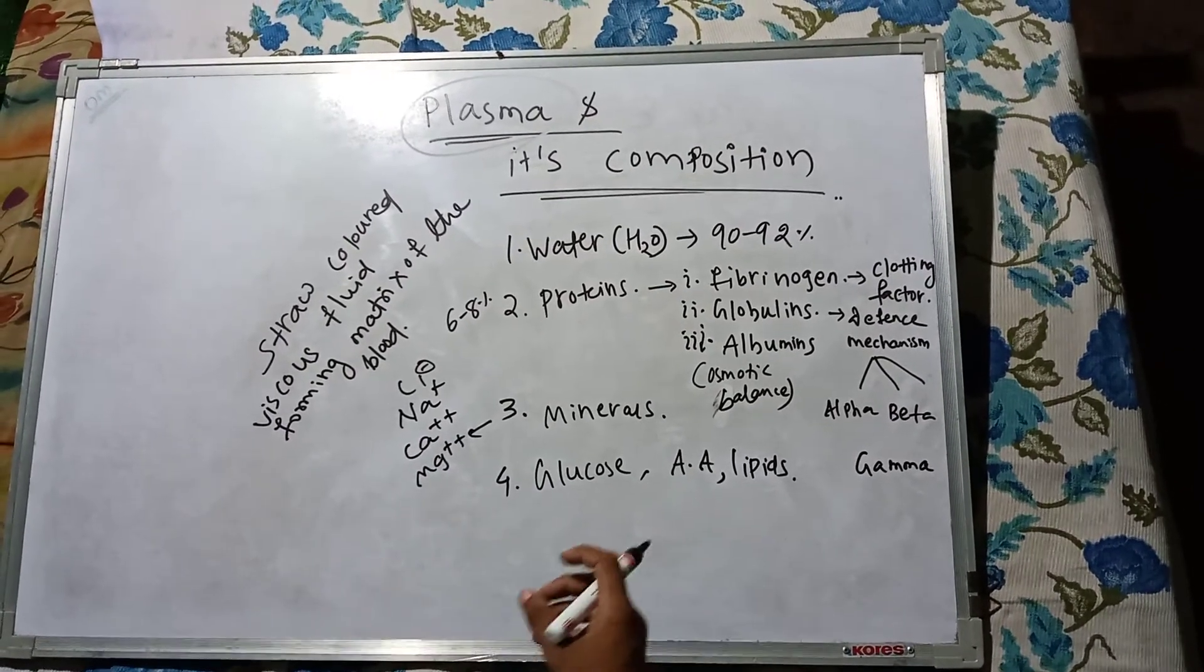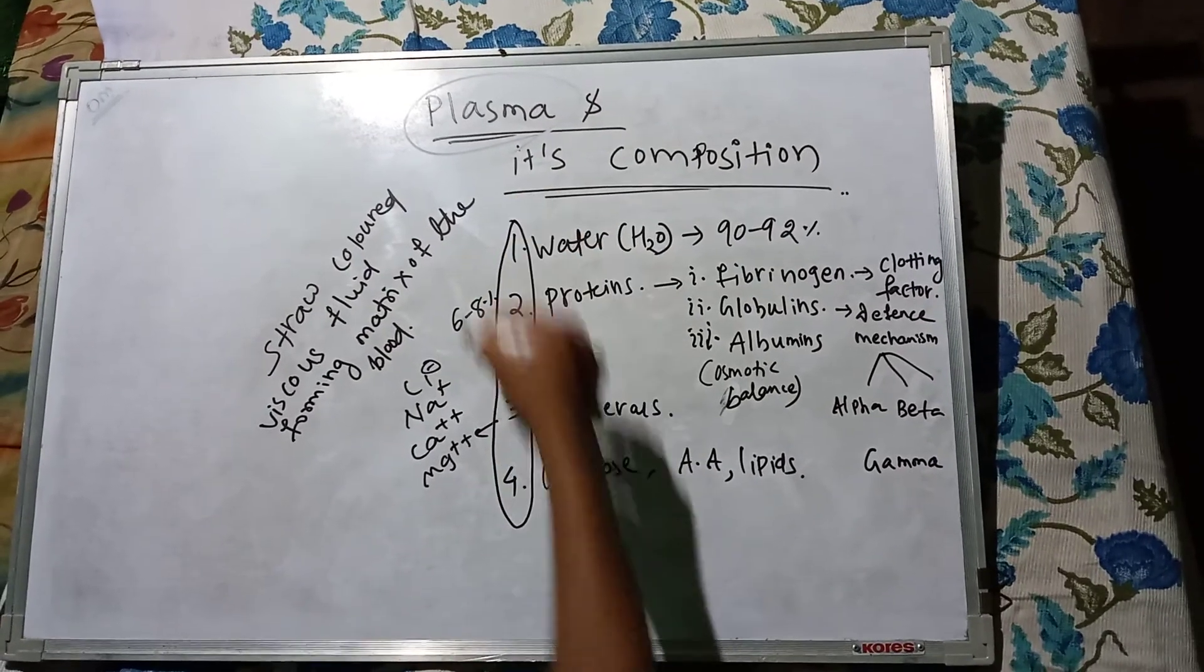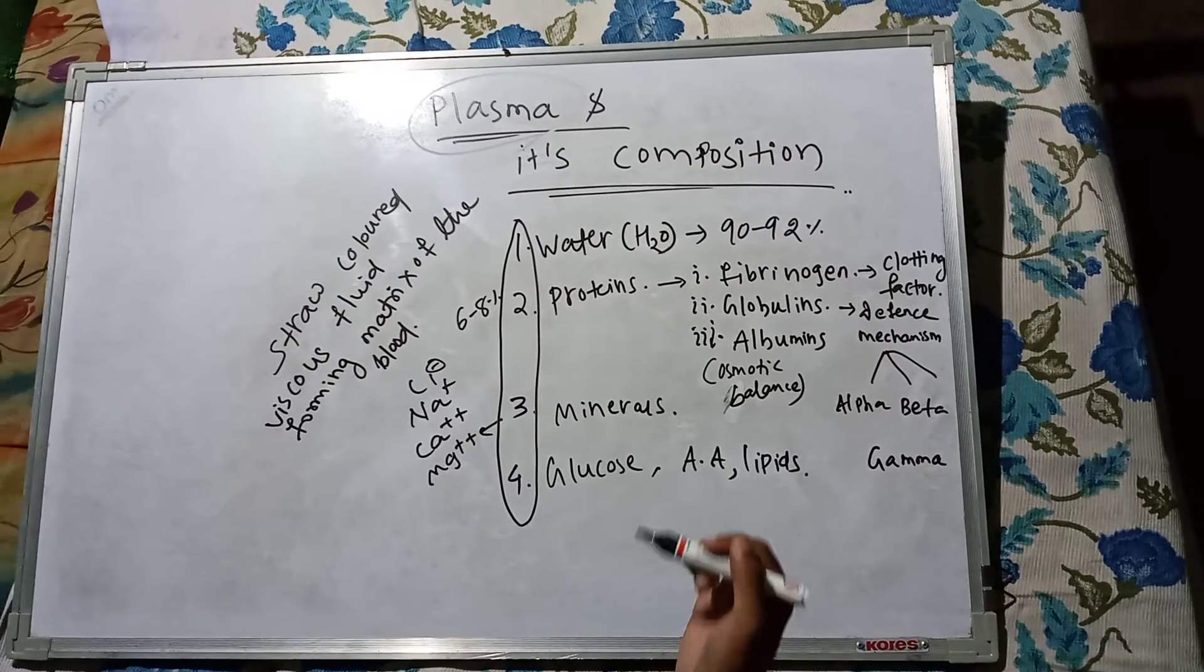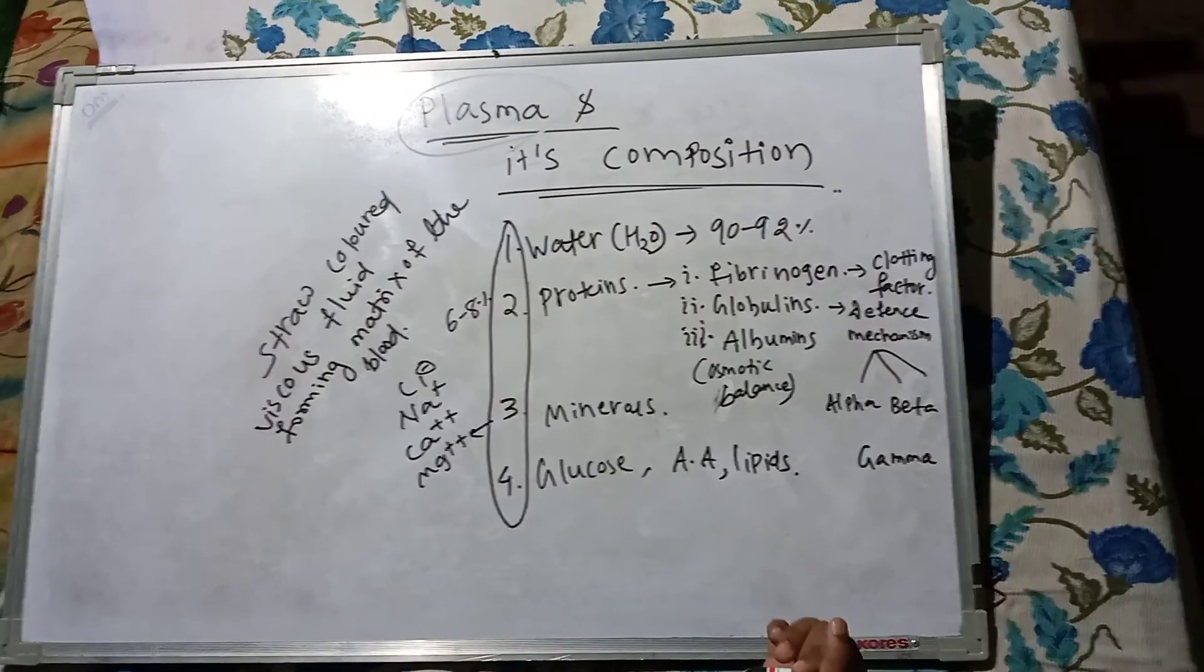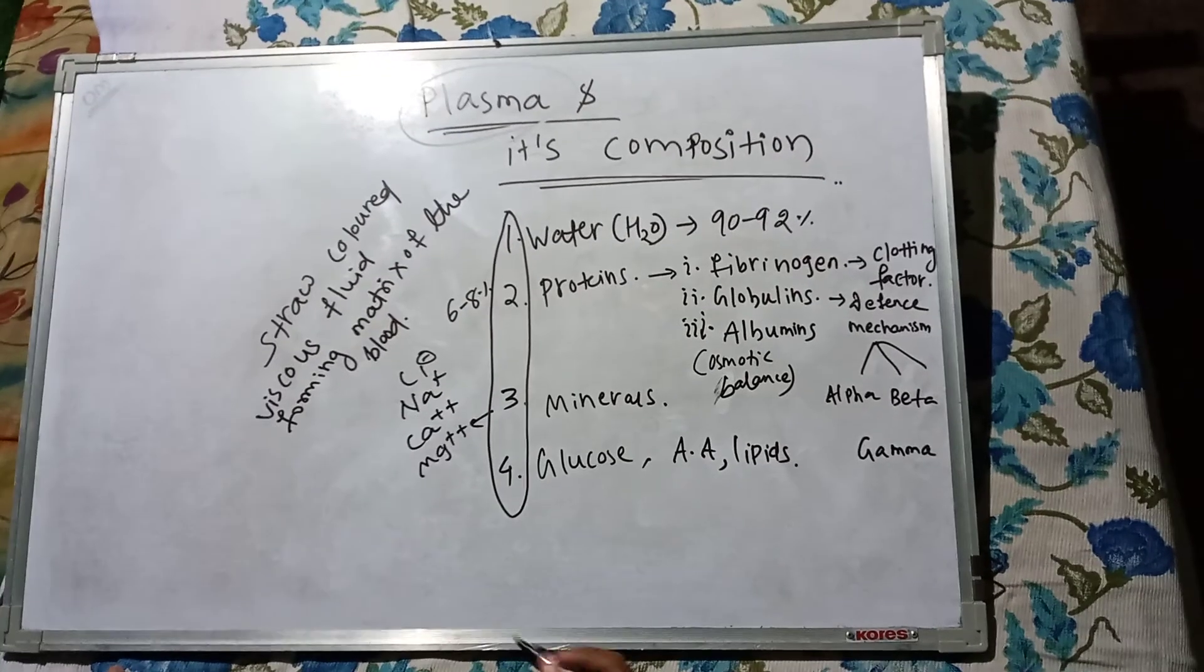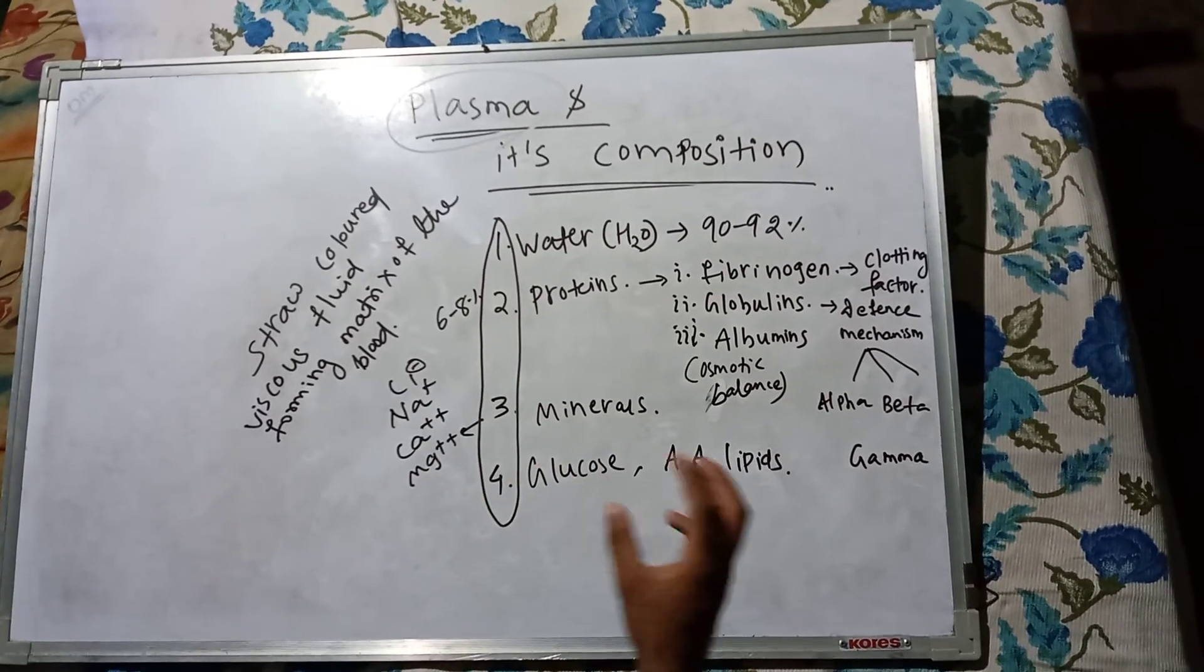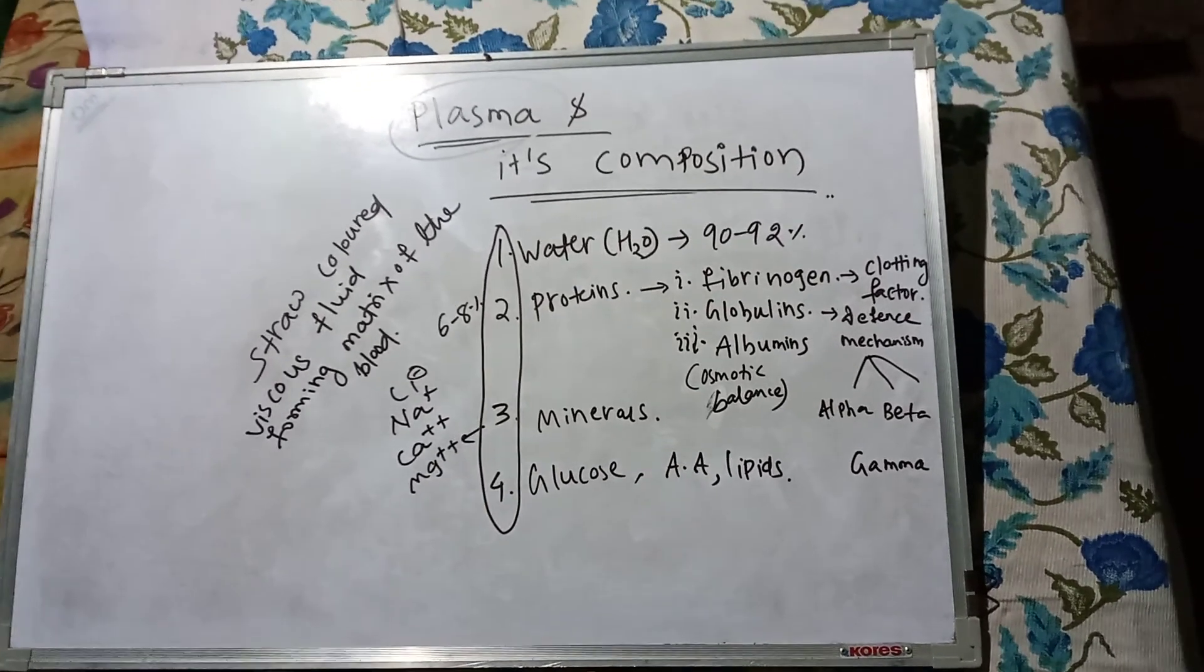So basically, these are the four compositions of plasma: water, proteins, minerals, and glucose, amino acids, and lipids. In this video, we have discussed the definition of plasma and its composition. Thank you.